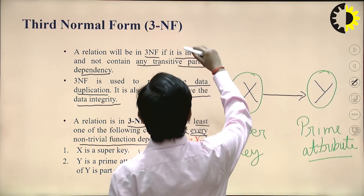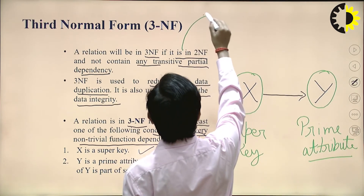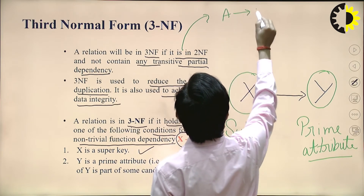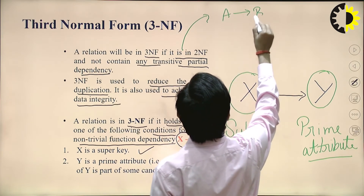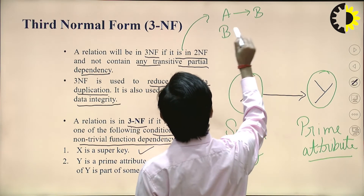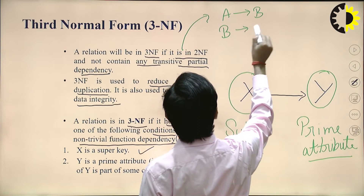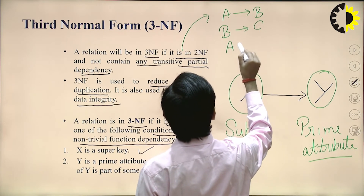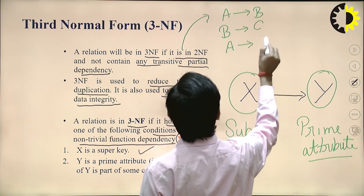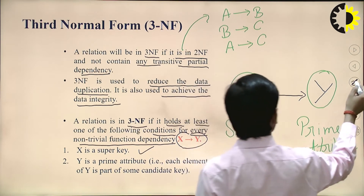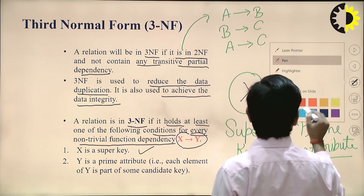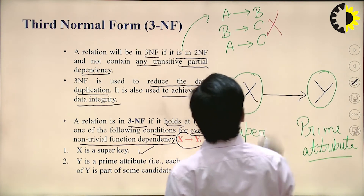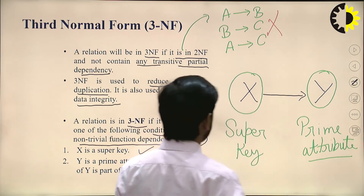What this means: if A determines B and B determines C, then A determines C — this transitive dependency is not allowed in Third Normal Form.